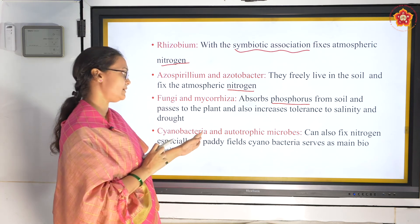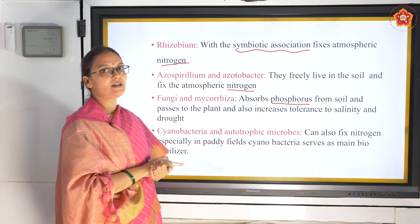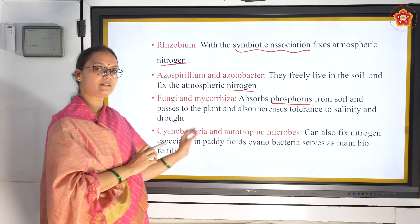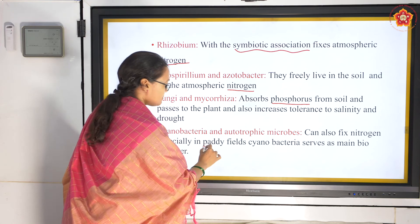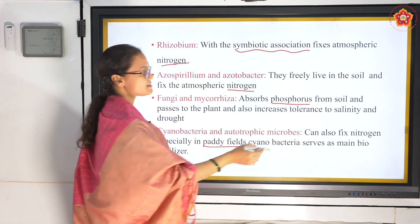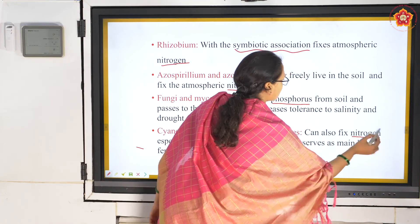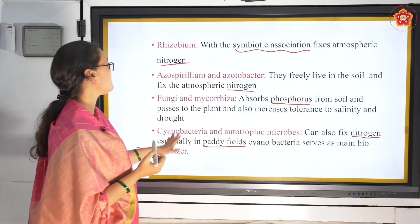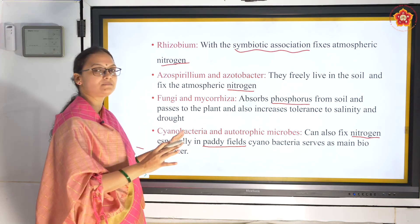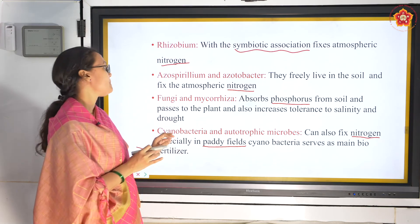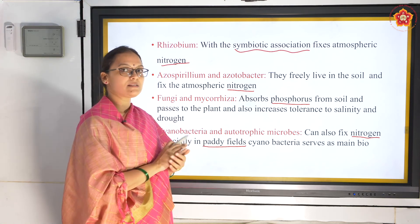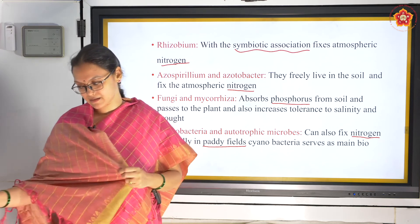Next are cyanobacteria and autotrophic microbes. These are usually used in paddy fields - cyanobacteria used in paddy fields is an important point. They also fix nitrogen. So among all biofertilizers, Rhizobium, Azospirillum, and cyanobacteria are all nitrogen-fixing. The only one that absorbs phosphorus is fungi and mycorrhiza.